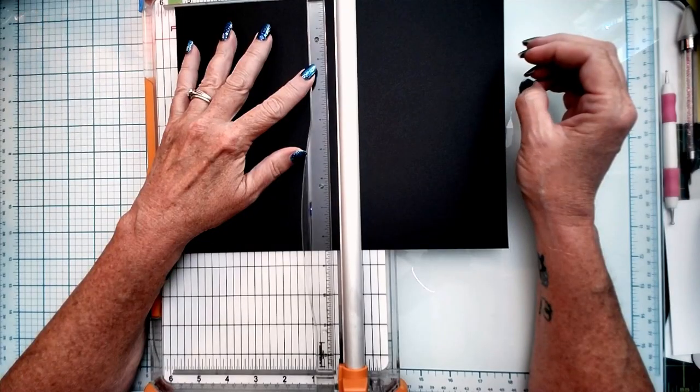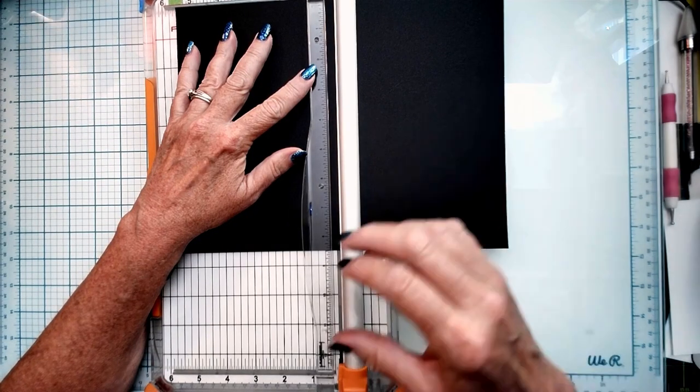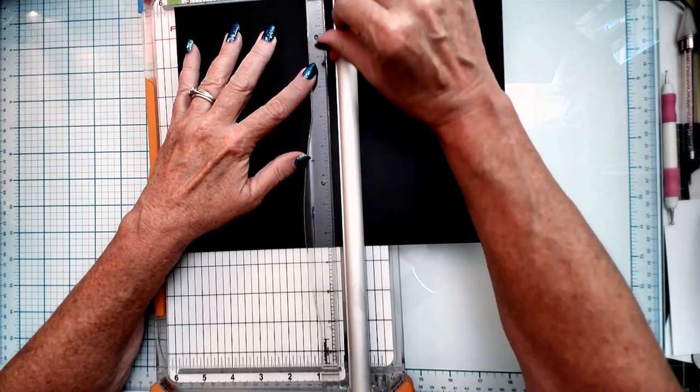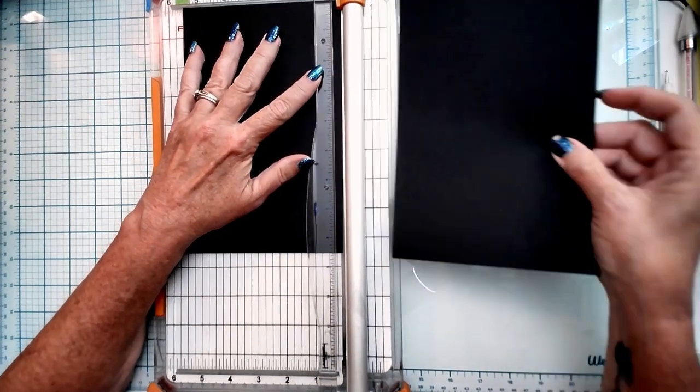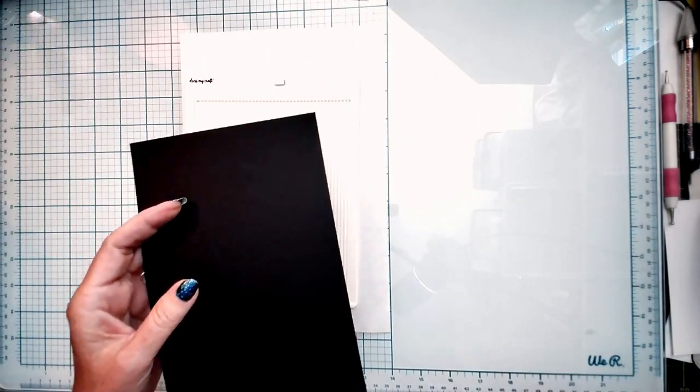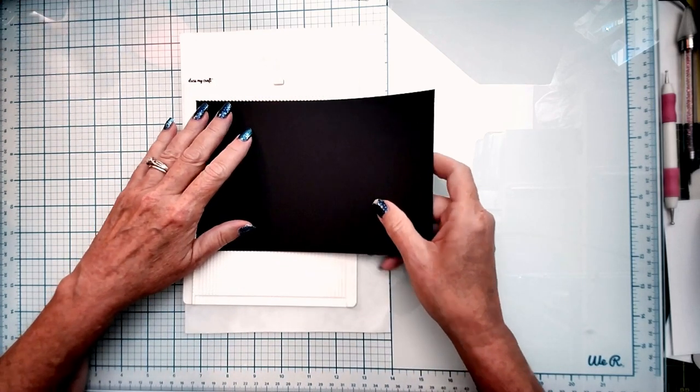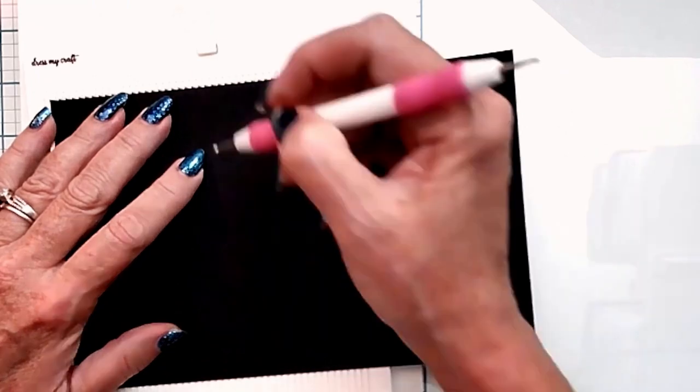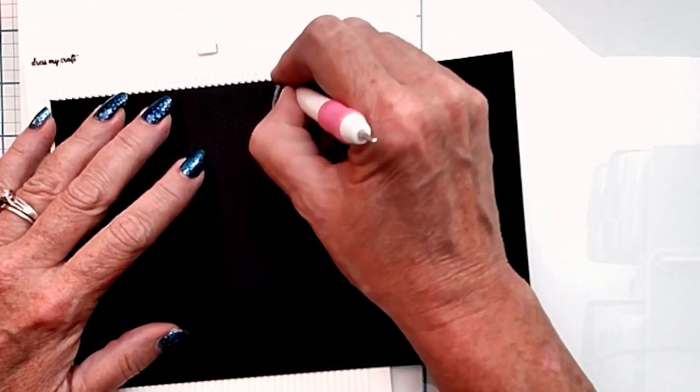I'm using 110-pound black cardstock from Michaels. We are going to place our 8½ by 11-inch cardstock into our trimmer with the 11-inch side against the ruler. Trim at 5½ and then grab your scoreboard. We're going to score our base on the 11-inch side at 4¼ inches.